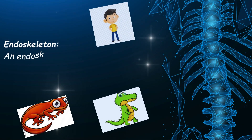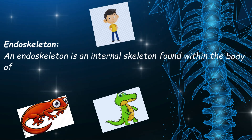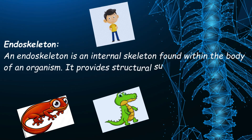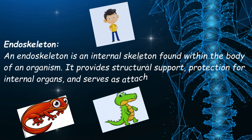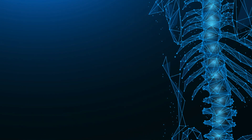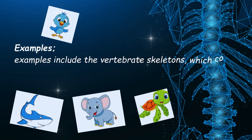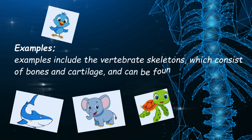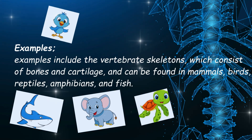First we will learn about endoskeleton. Kids, an endoskeleton is an internal skeleton found within the body of an organism. It provides structural support, protection for internal organs, and serves as attachment points for muscles. Examples include the vertebrate skeletons, which consist of bones and cartilage, and can be found in mammals, birds, reptiles, amphibians, and fish.